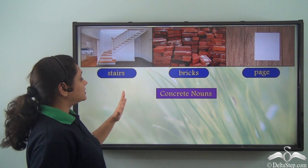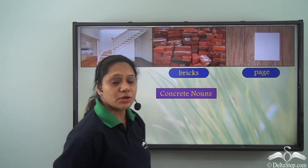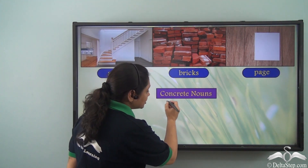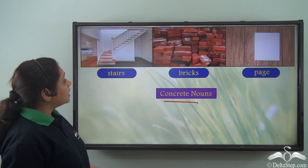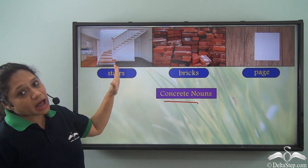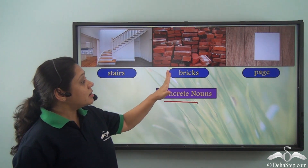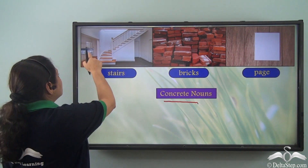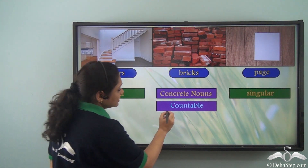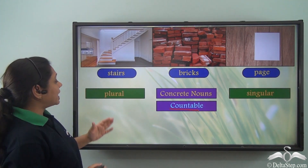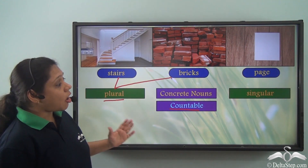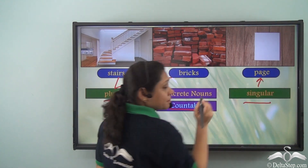Now let us read the words here: stairs, bricks, page. All these words are concrete nouns — we can physically touch them and see them. We can count the number of stairs, we can count the number of bricks, and we have a single page here. So concrete nouns are countable. They can be plural, as in the case of stairs or bricks, or they can be singular, like a page.